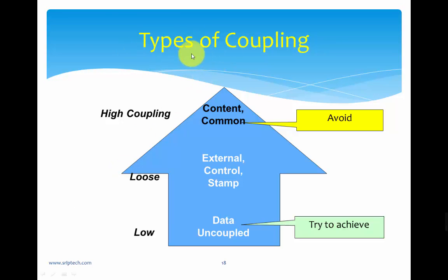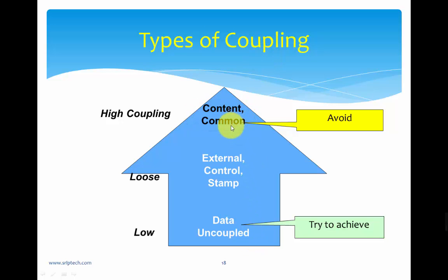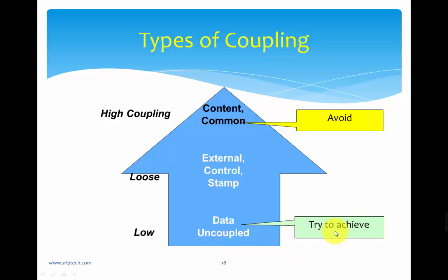There are different types of coupling. Content coupling and common coupling are high coupling mechanisms and should be avoided. External coupling, control coupling, and stamp coupling are looser forms and are more advisable, though not always ideal. What we should aim to achieve is data coupling or uncoupled modules with no dependency at all.